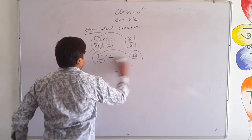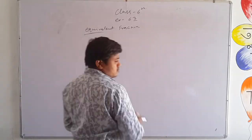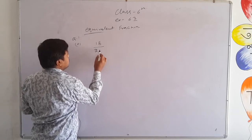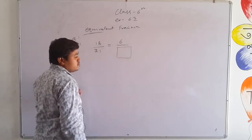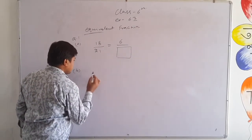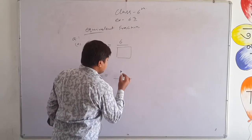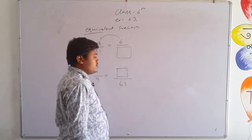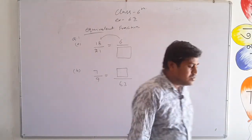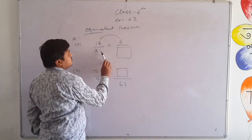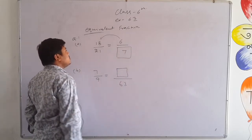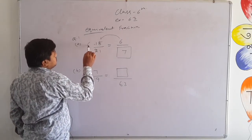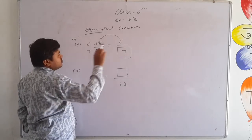Now let us do exercise 6.3 question number 1. Part A: 18 upon 21 equals 6 upon □ — we need to find what goes in the box. Check: in 6's table, 18 comes at position 3. So 21 divided by 7's table — 3 times 7 is 21. Or another way: cut both by 3's table — 3 goes into 6 at position 2, 3 goes into 21 at position 7. So the answer in the box is 7.